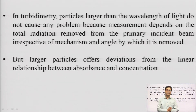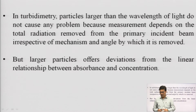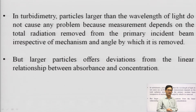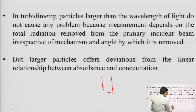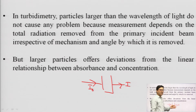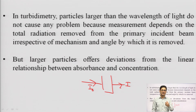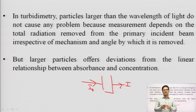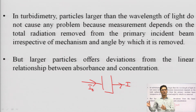In turbidimetry, particles larger than the wavelength of light generally do not cause any problem, because the measurement depends upon the total radiation removed from the primary incident beam, irrespective of the mechanism and the angle at which it is removed. We only need to see how much intensity is being lost — whether due to absorption, reflection, or scattering — and compare incident light intensity to transmitted light intensity.